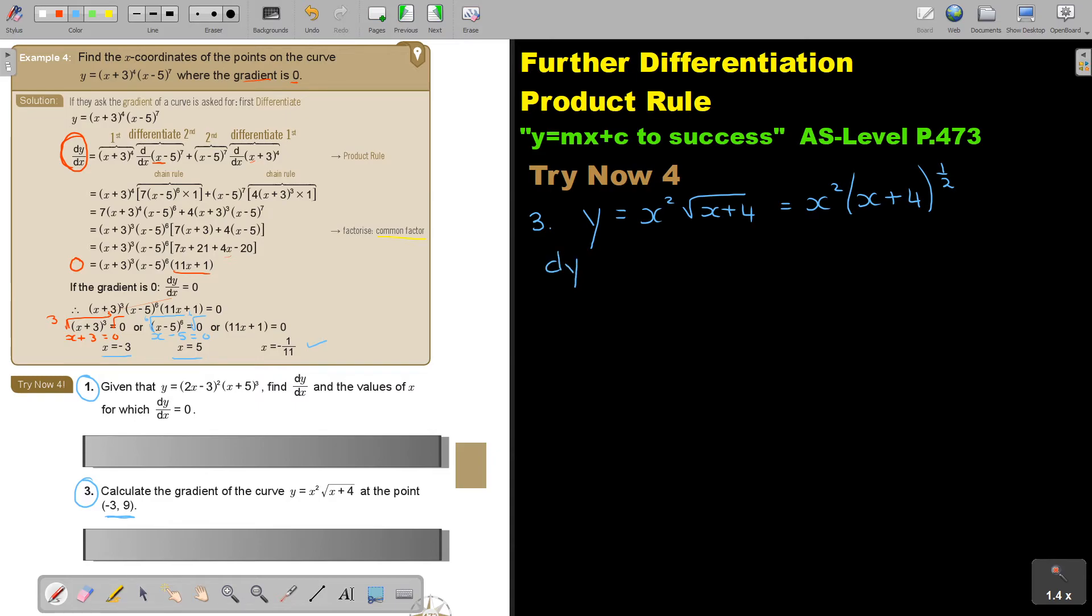So dy by dx is equal to, rewrite the first one, differentiate the second one. So if I differentiate, it's a half, it's x plus 4, and if I subtract 1, it's going to be negative a half. Multiply, differentiate the inside 1. Plus, rewrite this one, and multiply, differentiate this one.